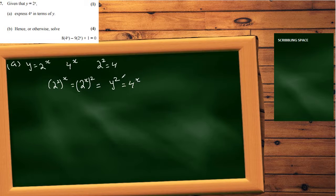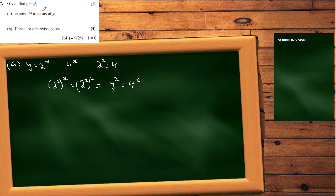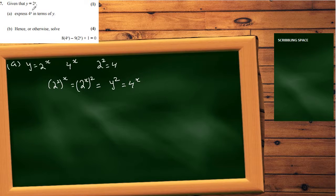Part B says 'hence or otherwise,' meaning there is a relationship from part A to use. We have proven that 4 to the x equals y squared, and 2 to the x is already given as y, so we now need to solve the given equation using these substitutions.